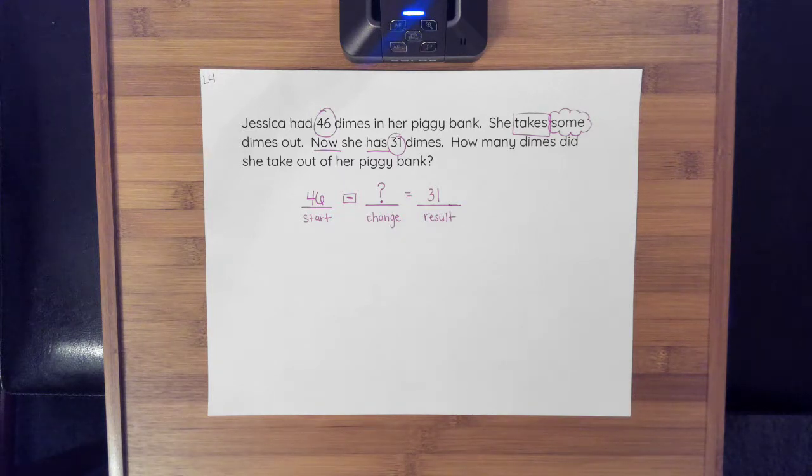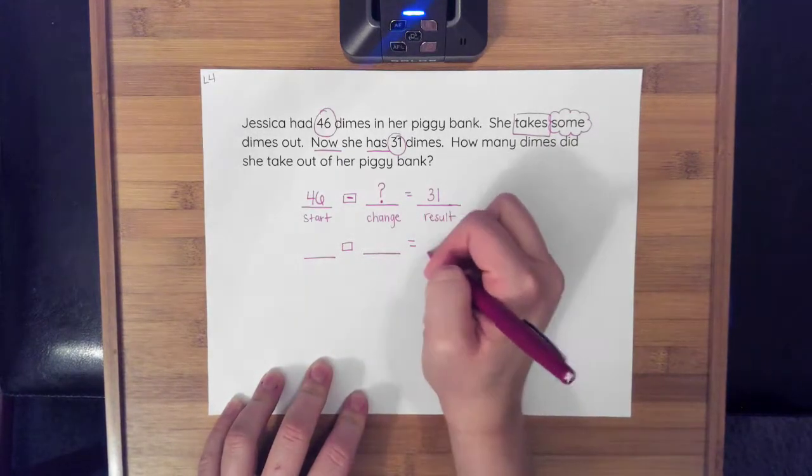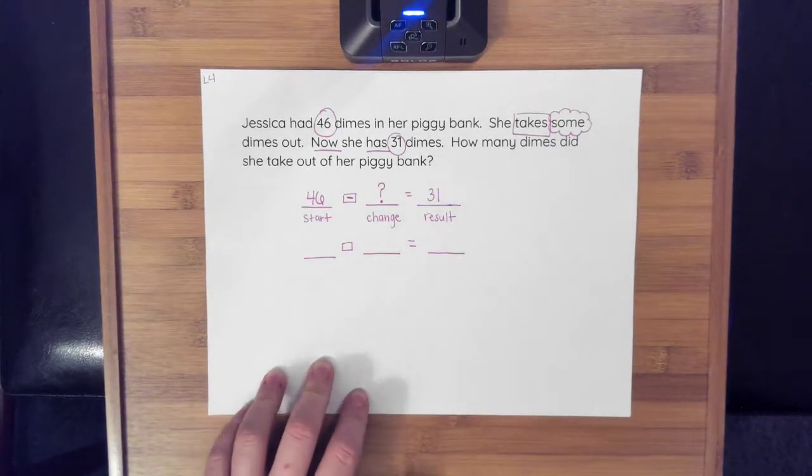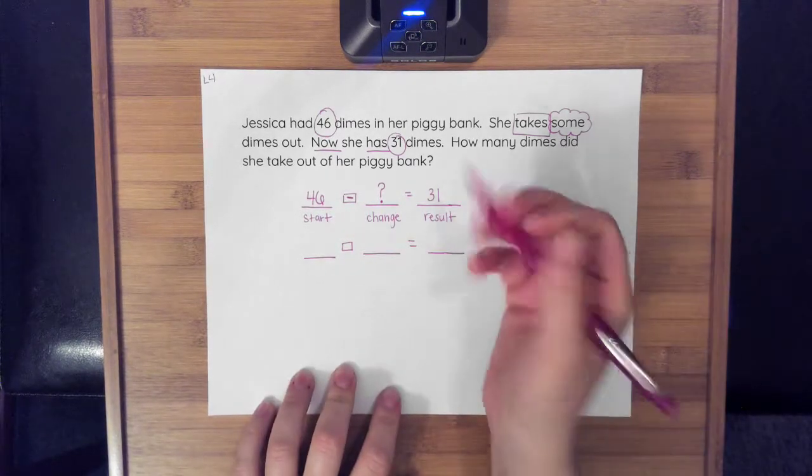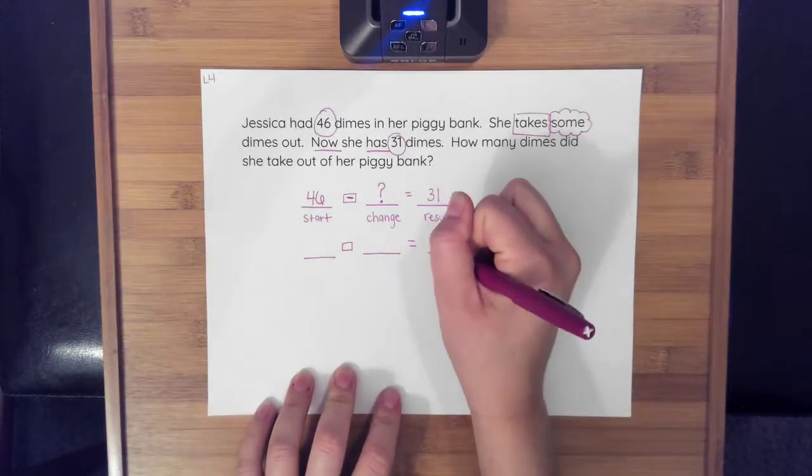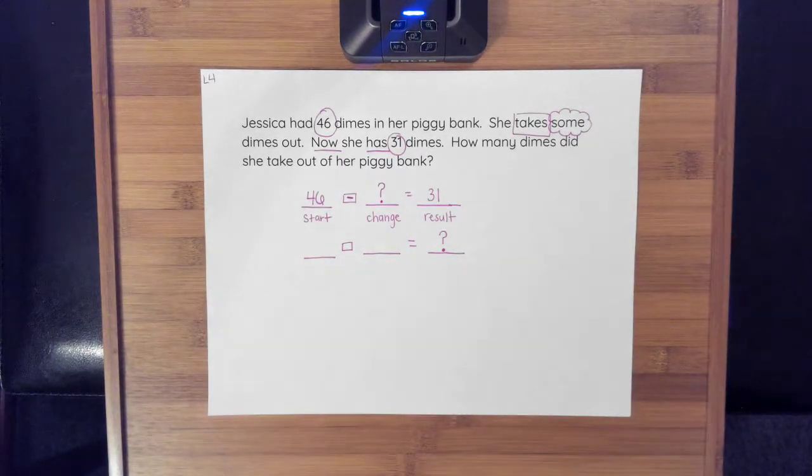Well, right now, if you have 46 and you try to take something away, or question mark away, can you do that? No, I can't. So I want to think about how can I rearrange this equation so that I can solve and figure out this unknown number. I know that I want to move my question mark over to the result because that's what I want to figure out. That is my unknown right now. I don't know how much I got rid of.